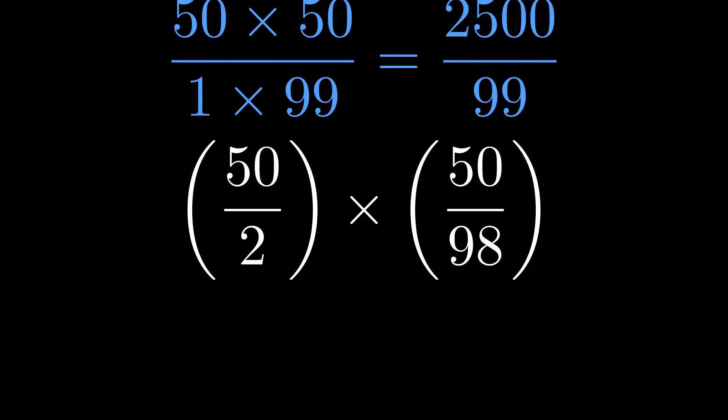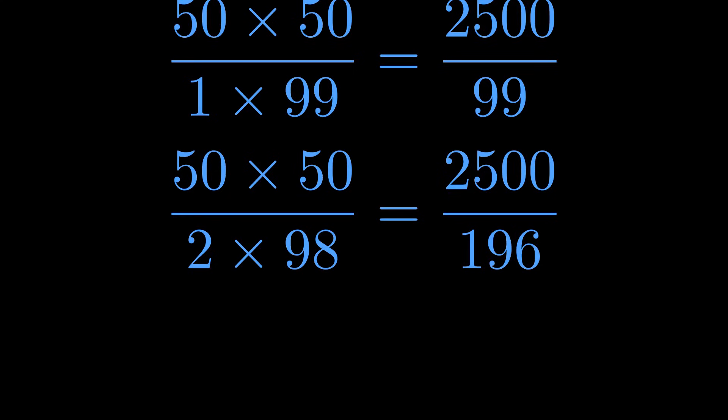Okay, let's try another pair. Second term from the beginning, second term from the end. Same story: 2500 over 196, which is also way greater than one.